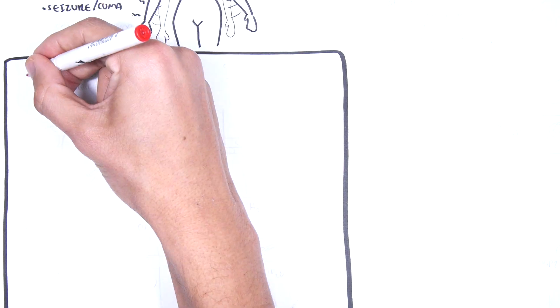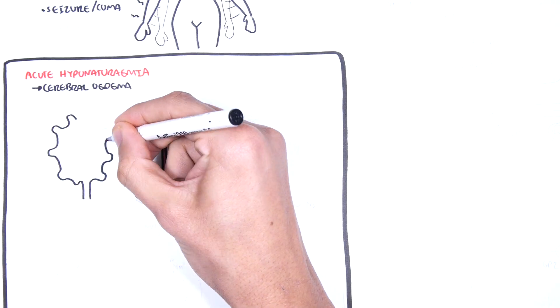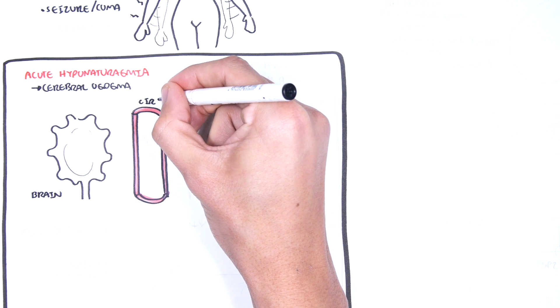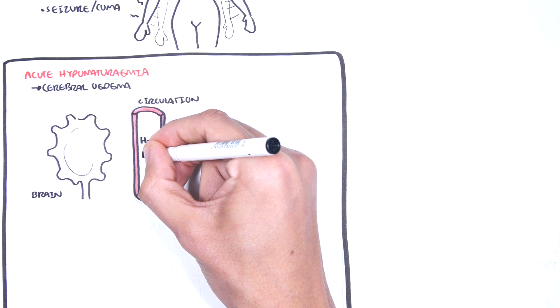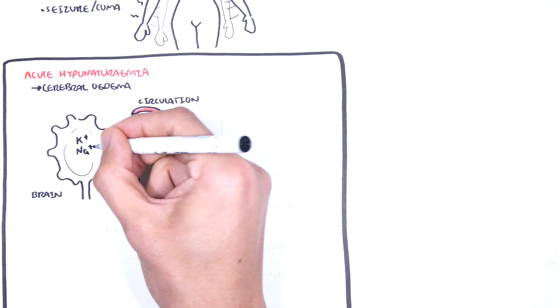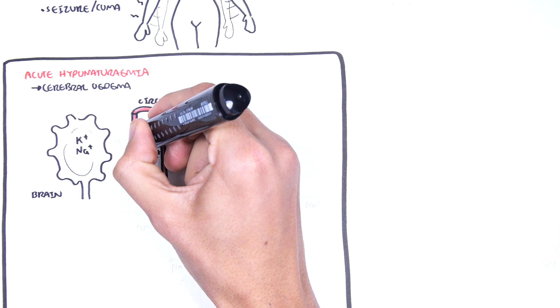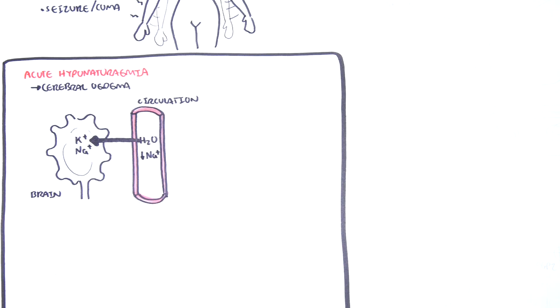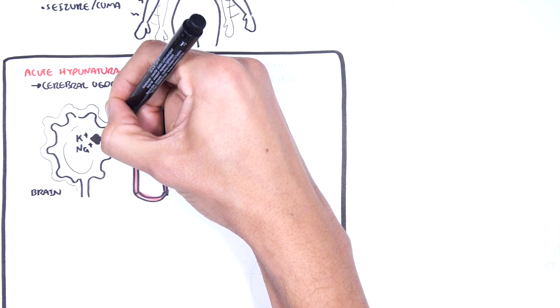Let's look at cerebral edema, the dangerous complication of acute hyponatremia. You can imagine here is the brain and its neuron, and here is the circulation. In the circulation, you have water and low sodium levels. In the brain, you have adequate electrolyte levels, including sodium and potassium. Now, if you have suddenly low sodium in circulation, according to the osmotic gradient principle, water will move to the area with more solutes, and so will develop edema rapidly.